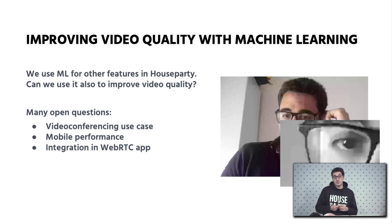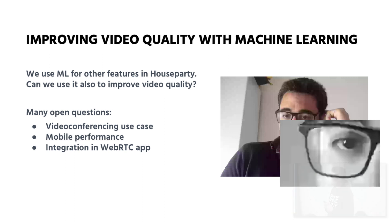In Houseparty we use machine learning for other features, and we were wondering if we could also use it to improve video quality. As you all know, when you are encoding video in any video conference, the compression of the codec introduces some artifacts in the image — you get blocking, you get ringing, you get blurring — those kinds of artifacts that degrade the image.